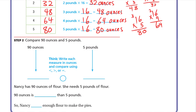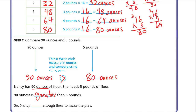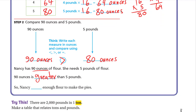She has 90 ounces, so we compare 90 ounces to five pounds which equals 80 ounces. Ninety ounces is greater than 80 ounces. So 90 ounces is greater than five pounds, and Nancy has enough flour to make the pies.